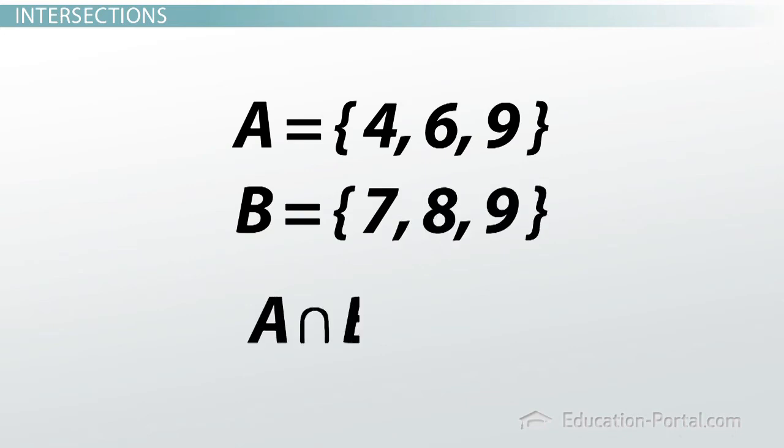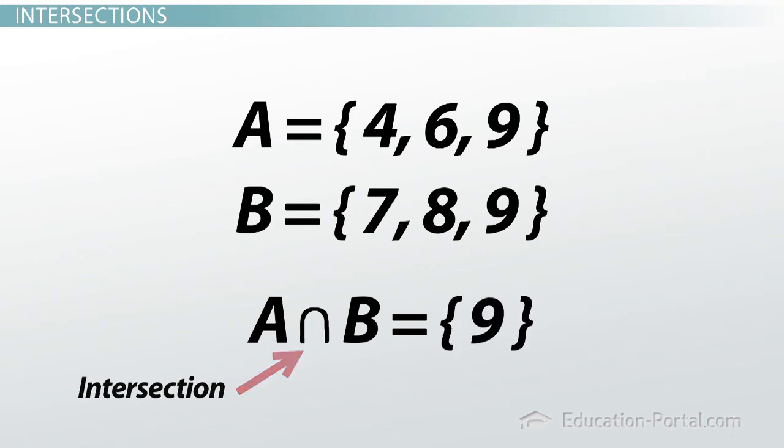A intersect B represents the intersection of sets A and B. Yeah, that upside down U represents intersection. This represents all the elements that are the same in A and B. How would that look using mathematical symbols? A intersects B equals 9.